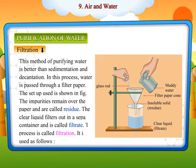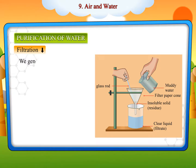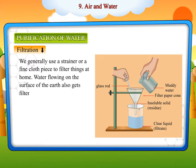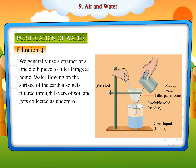We generally use a strainer or a fine cloth piece to filter things at home. Water flowing on the surface of the earth also gets filtered through layers of soil and gets collected as underground water.